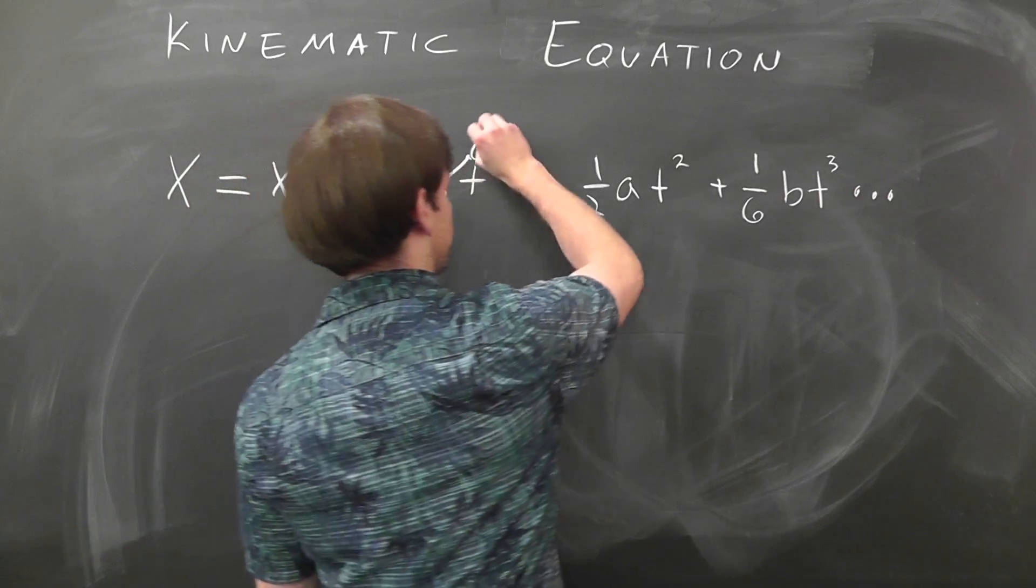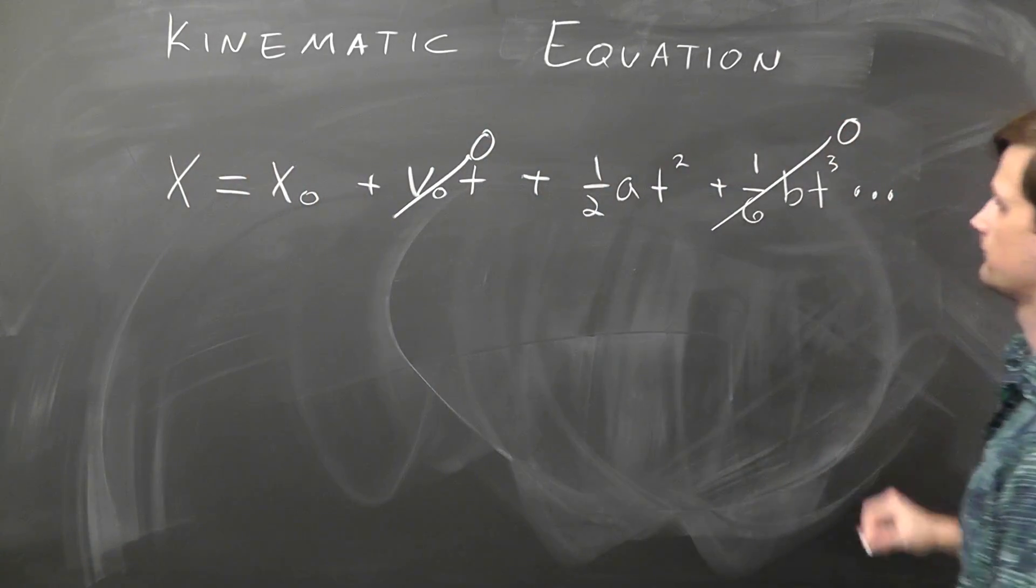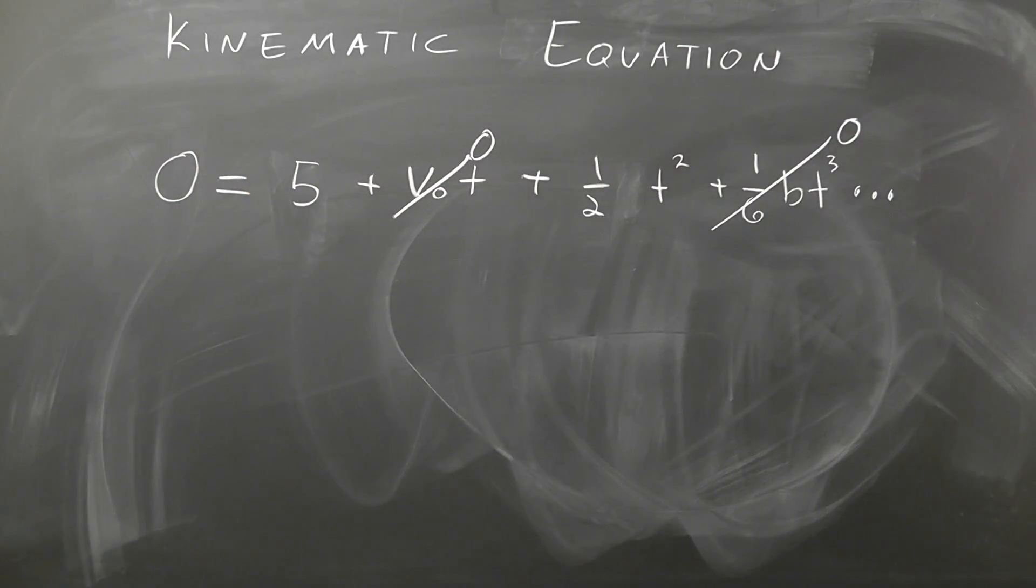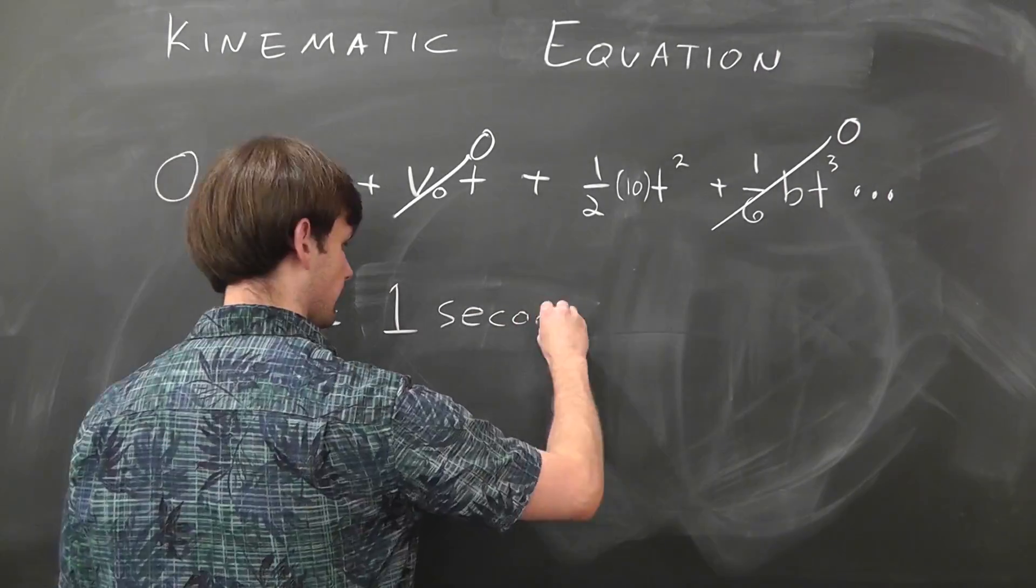If we assume that our initial velocity is 0, that no one cares about our b term because it's a jerk, our final position is 0, our initial position is 5, and that we have an acceleration that is roughly negative 10 meters per second squared, we can solve for t and find that it's roughly 1 second.